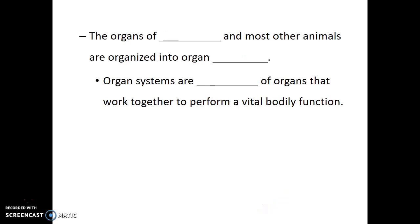Now the organs of humans and most other animals are then organized into what are called organ systems. Organ systems are teams of organs that work together to perform a vital bodily function. This is the level of the biological hierarchy that we'll be spending our next few lectures on. We'll discuss different human organ systems, talk about the organs that are present and how they function — the anatomy and physiology of the human body. See you in the next videos.